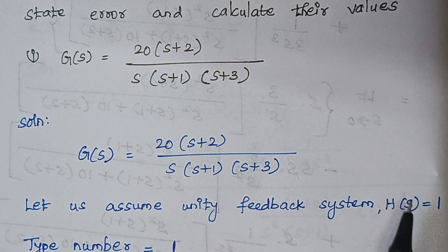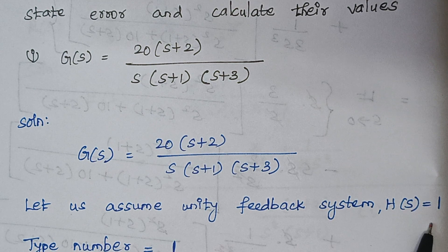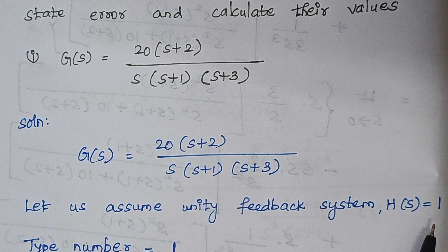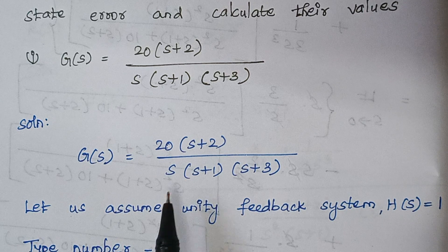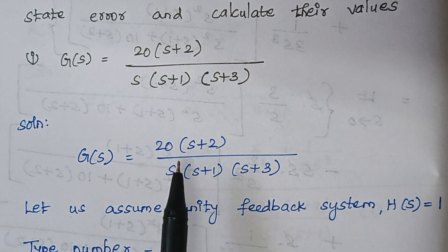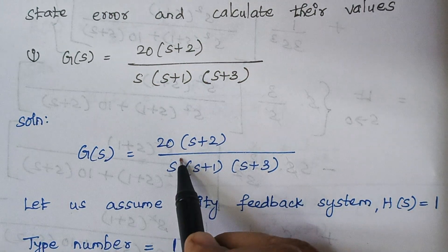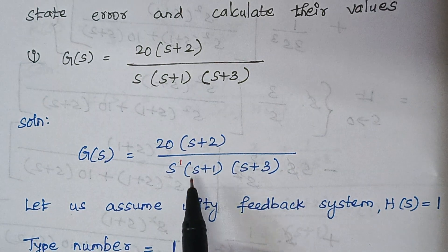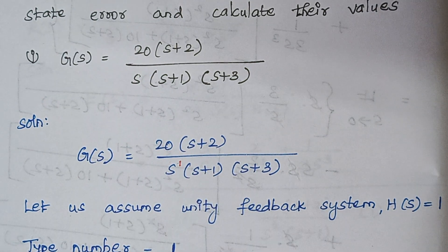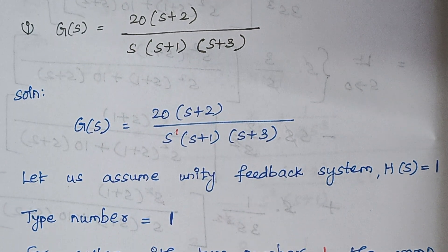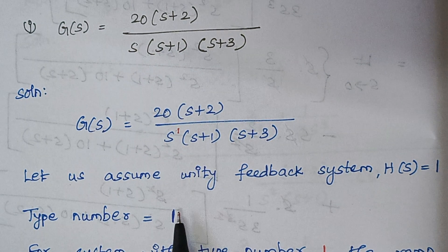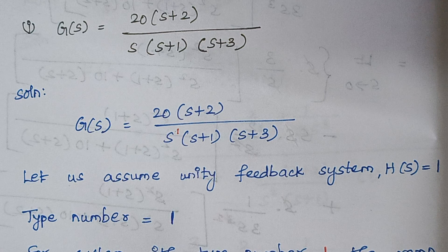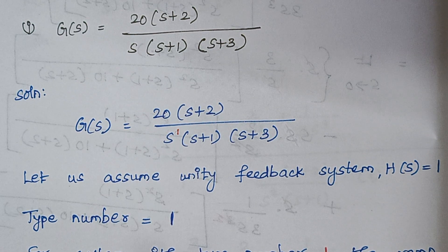The feedback is represented by H(s), so H(s) is equal to 1 here. Next, when you look at the problem, the type number is determined by the power of the individual s term in the denominator. Here there is an s with power 1, so the type number of the system is 1. For a system with type number 1, what is the input signal that gives steady state error?